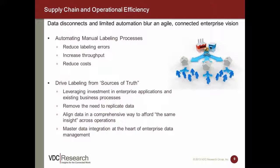At the same time, organizations are looking at automation as a means to improve overall throughput and lower cost by automating their manual processes. A key enabler for efficiency is driving labeling from a source of truth for that label data, meaning the source of the label data is directly connected and integrated with the labeling application. This is essential to remove the risk of replicating data to another repository or system, which can often encounter data synchronization issues.